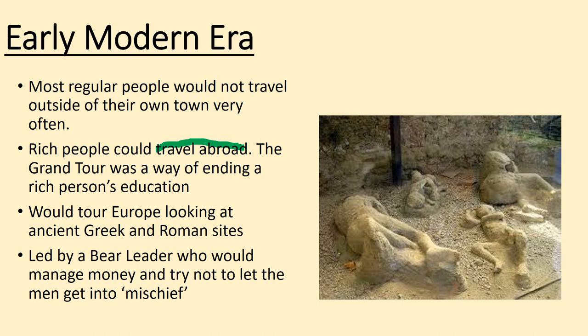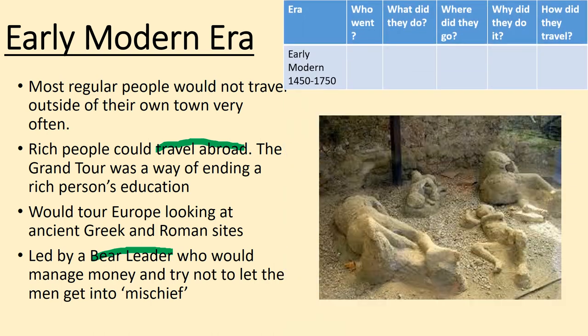The Grand Tour was led by someone called a bear leader, often someone who worked at the school — like a tutor. They would manage the money on the trip and try to keep the young men out of trouble. If they did get into trouble, the bear leader would resolve the situation by paying for damages and making sure there were no consequences. Now is the time to fill in this row for the early modern era — anything you miss we'll take up at the end.